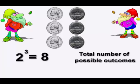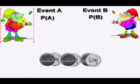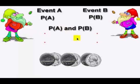That's the total number of possible outcomes when throwing three coins — heads or tails. Remember, that number eight is going to be the denominator for all individual probabilities. Event A is the first person getting whatever he gets, and event B has to be the same thing for the second person — he has to match. So what we're really looking for is the probability of A and probability of B, which in statistics means we multiply both probabilities together.